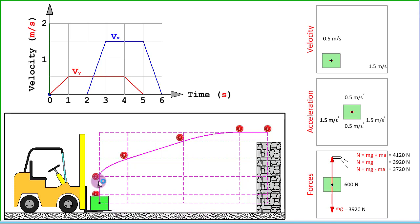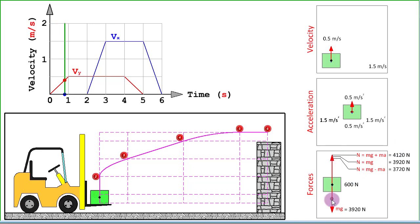Now we will run through all six free body diagrams one by one. Between 0 and 1 second we are accelerating upward, so there is a net upward force. F equals ma: mass is 400 kg, upward acceleration is 0.5 m/s². So the normal reaction will be 200 newtons more than the weight. Weight is 3920 newtons, while the normal reaction will be 4120 newtons.